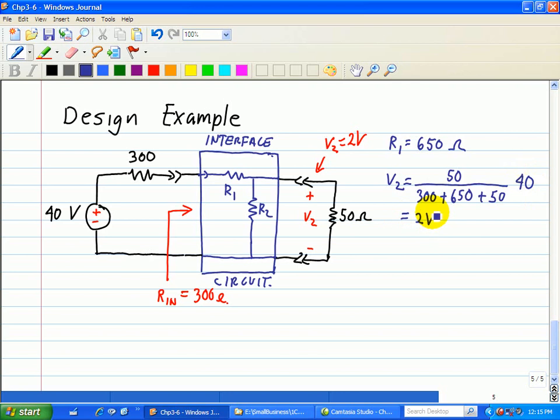Now, but let's look at, and that satisfies this constraint here of V2 equal to 2 volt. But let's look at the input constraint of 300 ohms.